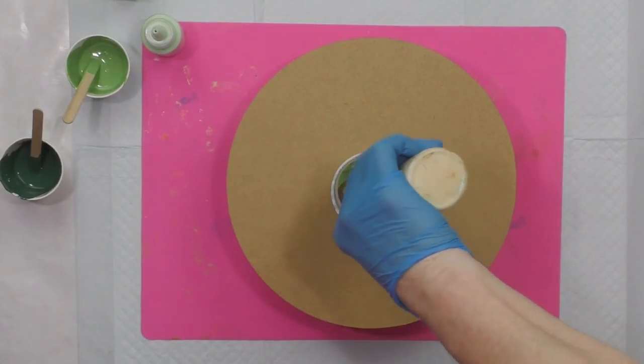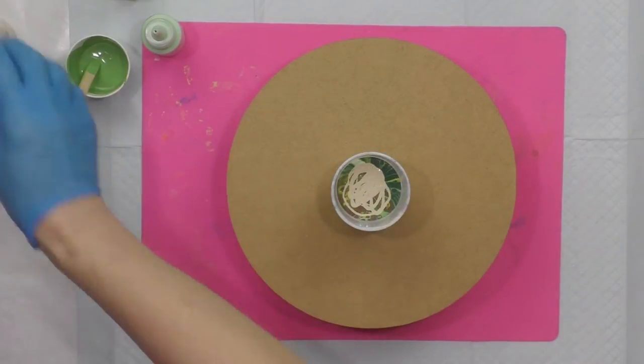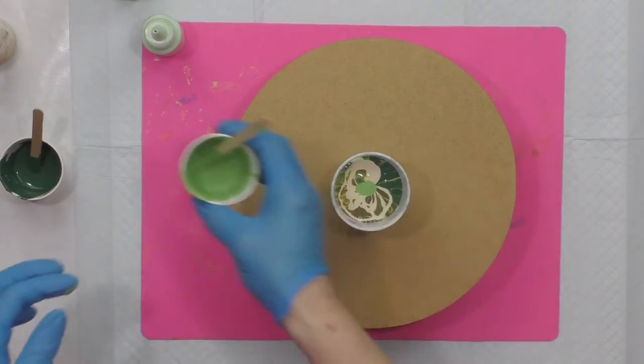Even if you pour up high or if you squirt in, you can also just layer on top with the squirt bottle. There's multiple ways to do it. It's going to all turn out differently every time you do it.